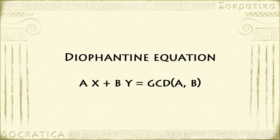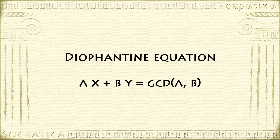One of the central problems in number theory is to solve Diophantine equations. A Diophantine equation is an equation where you want to find all integer solutions — you're not interested in other real number or complex solutions, only the integers. This turns out to be a much more difficult problem than just solving an equation generally. While in algebra you're interested in finding all solutions, in number theory you're interested in finding particular solutions, and this additional restriction makes the problem more difficult.